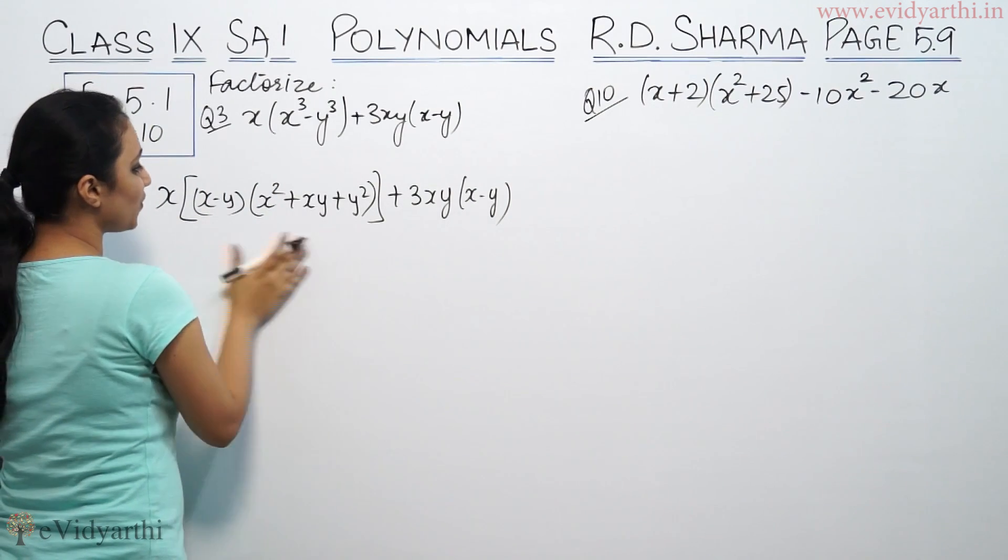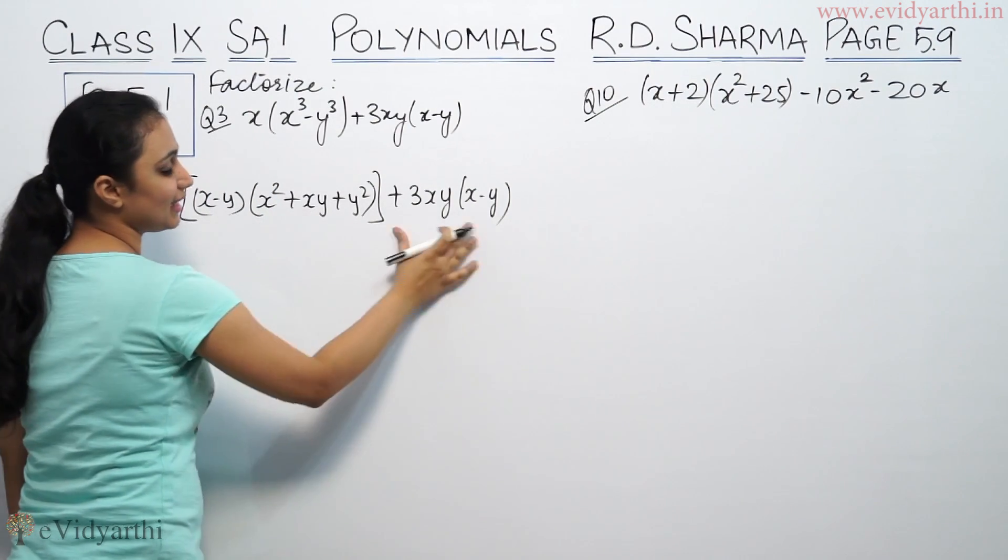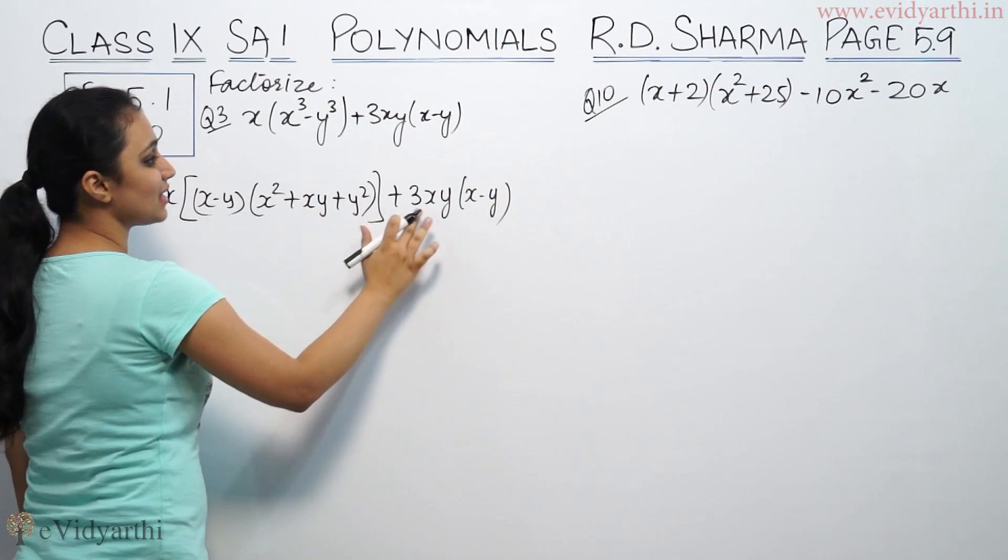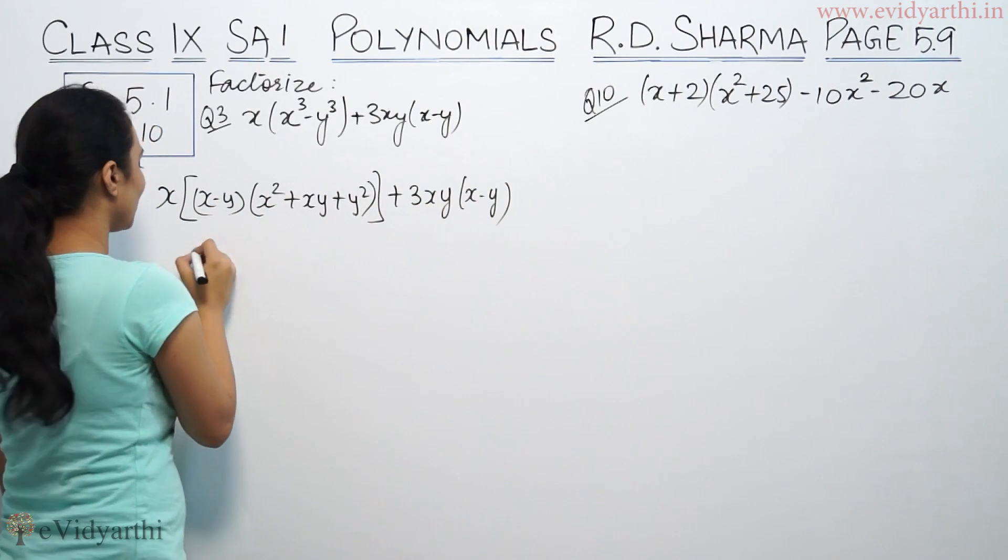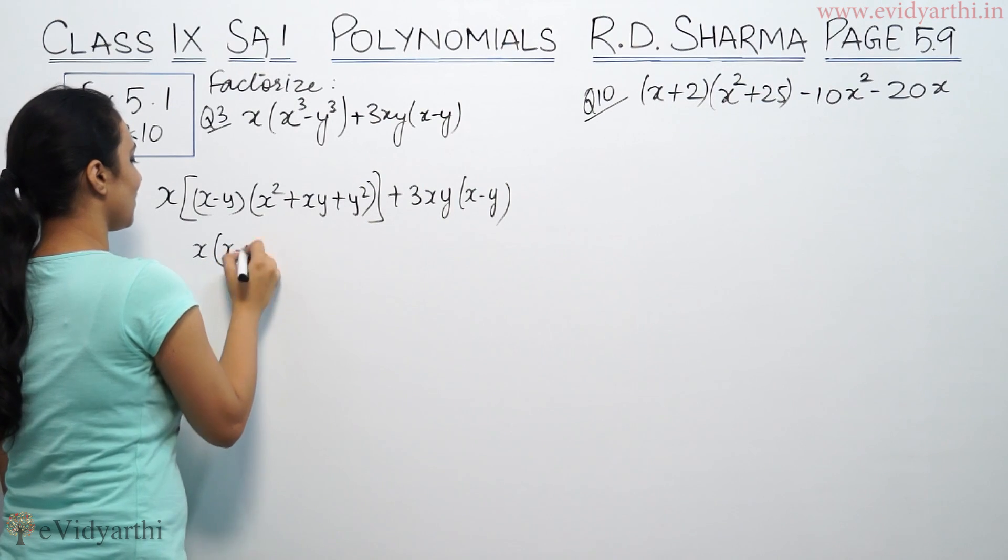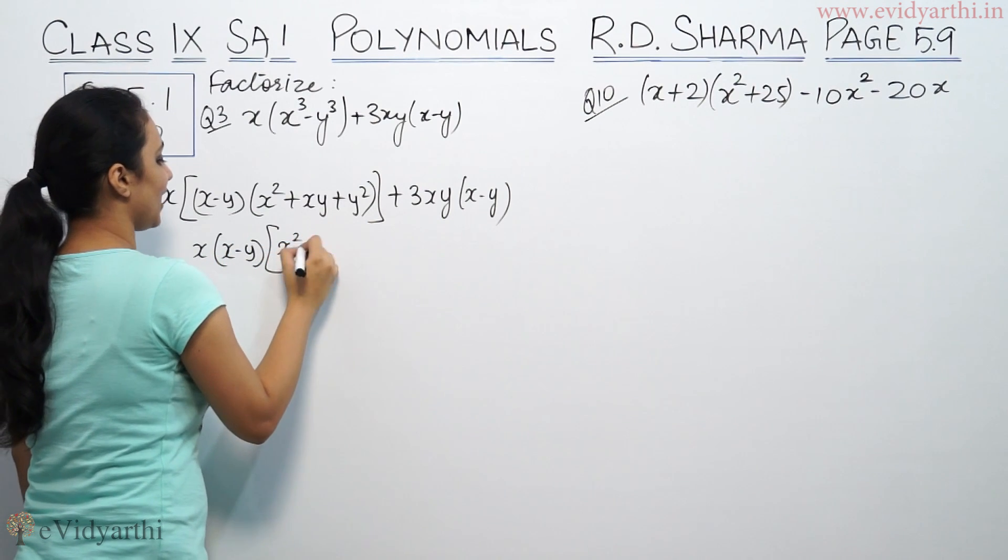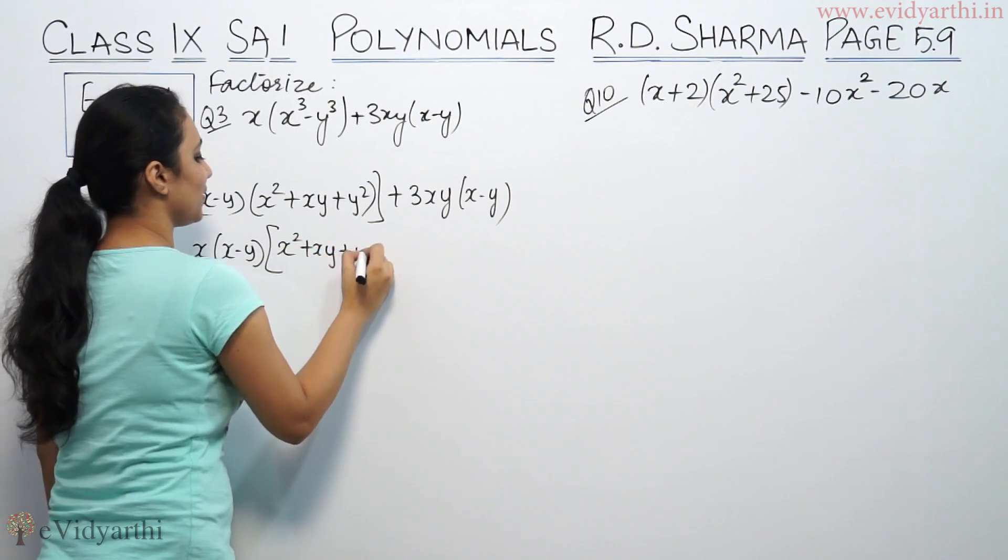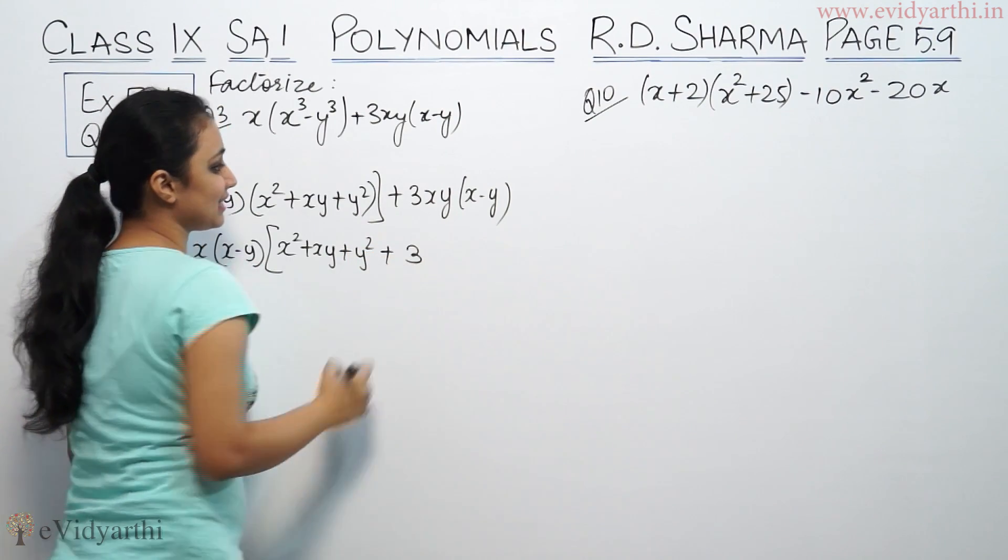So in this whole expression, the common term is x(x - y). So factor out x(x - y), and underneath we have x² + xy + y² + 3xy.